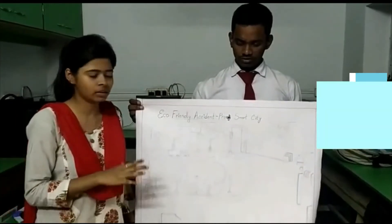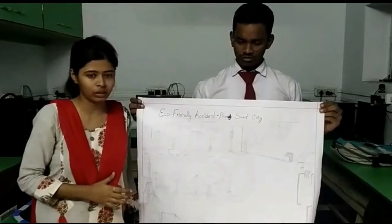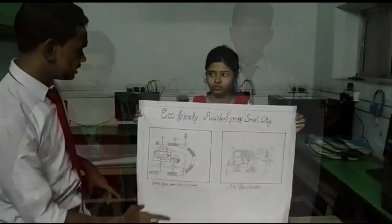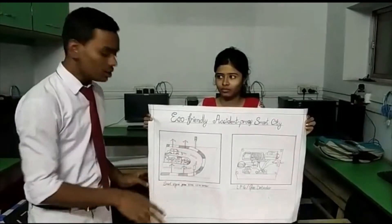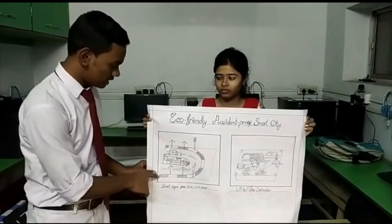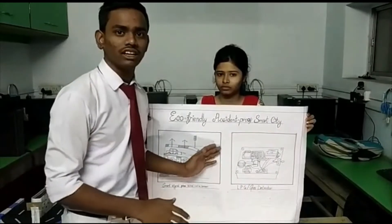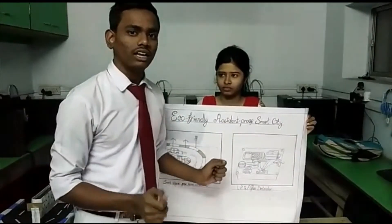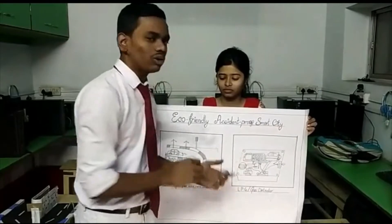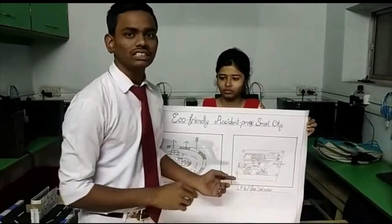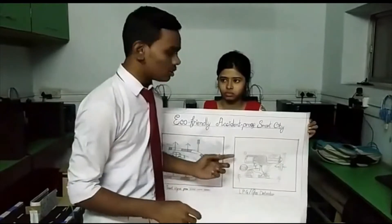This is our plan, and now we are going to show particular things about it. This is our smart street light and smart signals, which we use to indicate to cars. This is our LPC detector — if LPC gas is detected in a house, it will alert the owner through our system circuits.